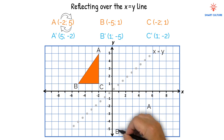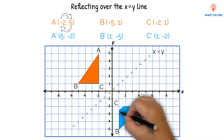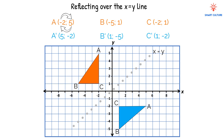Let's plot those points, and then we can draw our triangle that is reflected over the x equals y line. By exchanging the x and y coordinates for each point, you've effectively reflected triangle ABC over the line x equals y. This transformation flips the triangle along the line where x and y are equal.